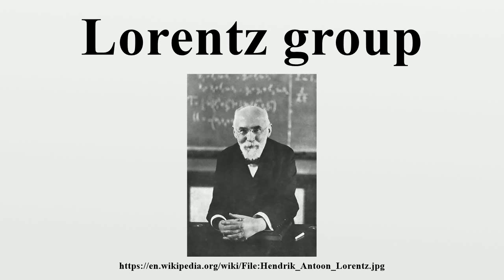Mathematically, the Lorentz group may be described as the generalized orthogonal group O, the matrix Lie group that preserves the quadratic form on R4. This quadratic form, when put on matrix form, is interpreted in physics as the metric tensor of Minkowski spacetime. The Lorentz group is a six-dimensional non-compact, non-abelian real Lie group that is not connected, and all four of its connected components are not simply connected.